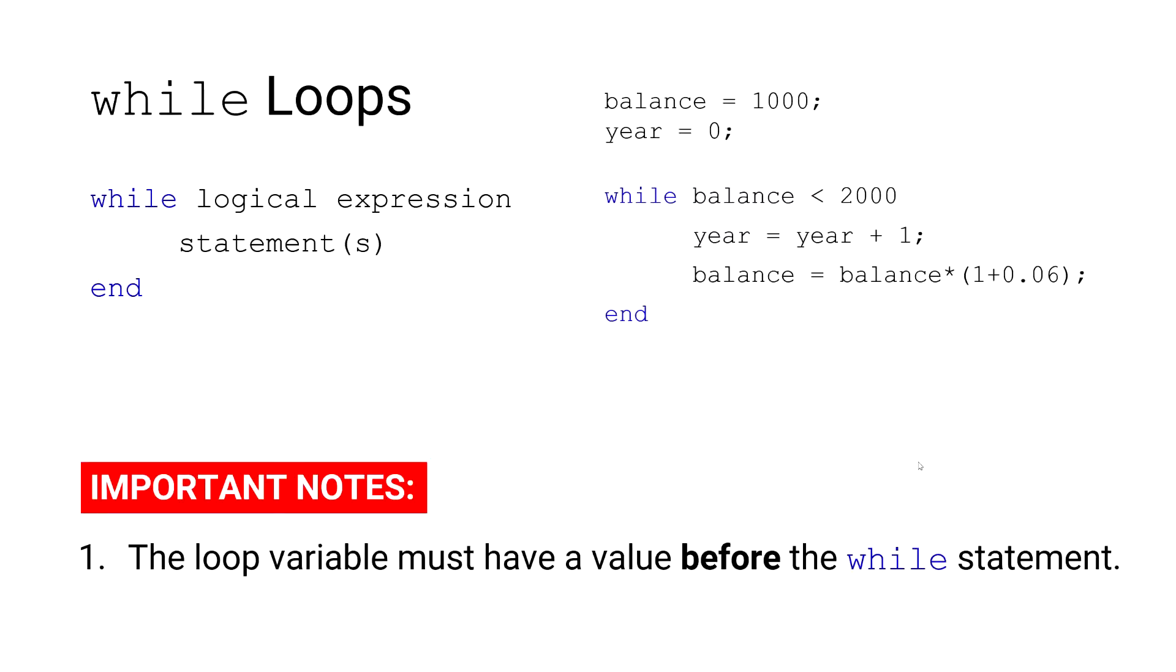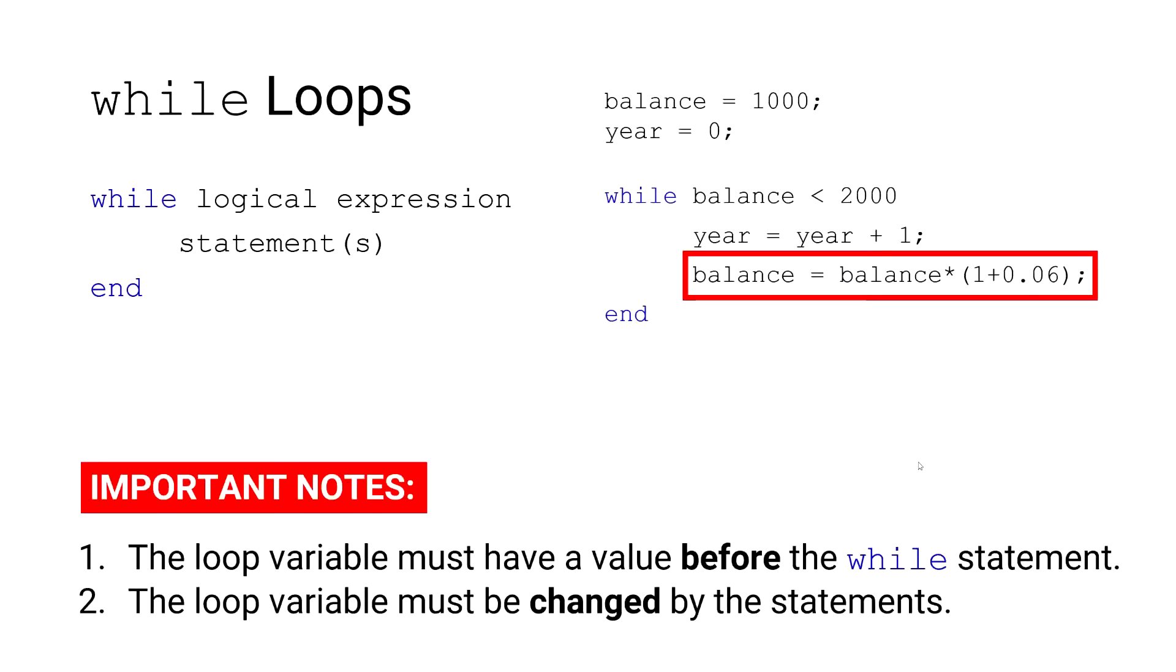We also need to initialize our year. The second note I'd like to make is the loop variable must be changed by the statements. And that's because if the balance doesn't change, then it has a fixed value of $1,000 and thus the balance would always be less than $2,000 resulting in an infinite loop.